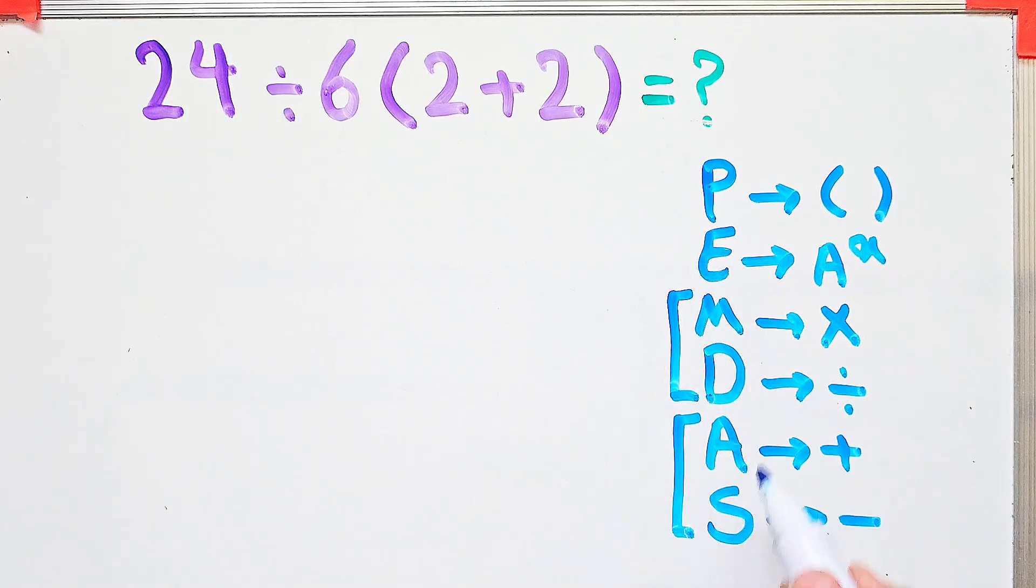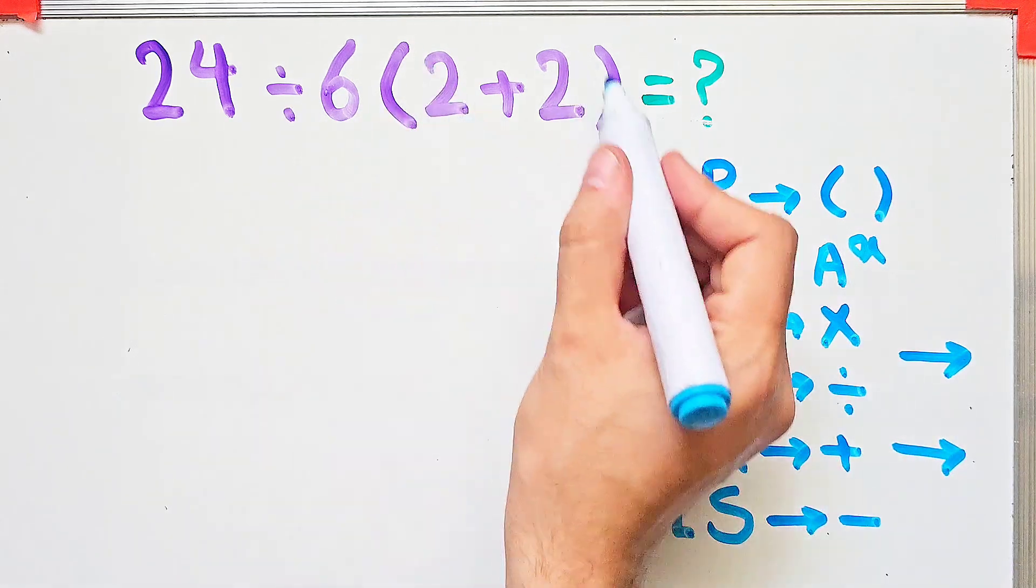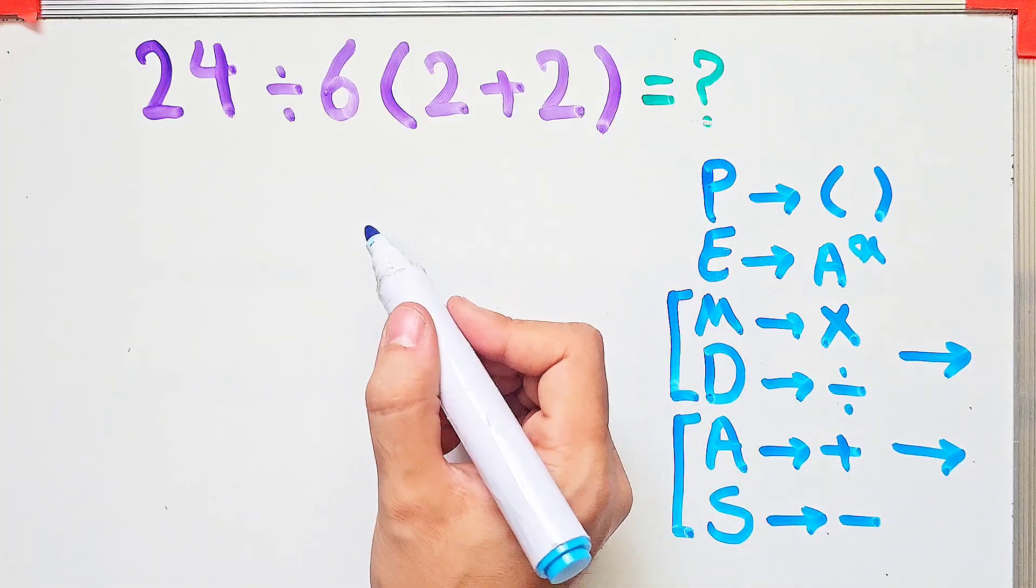The multiplication and division have the same level of priority. Also, addition and subtraction have the same priority. When we have both in an expression, we start from the left and simplify. In this question, we have division, multiplication, parentheses, and inside the parentheses, we have addition.